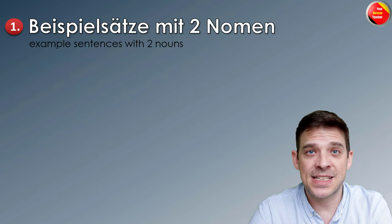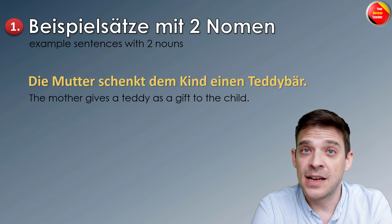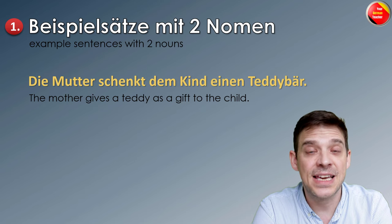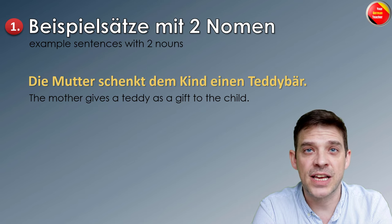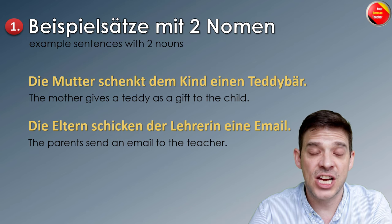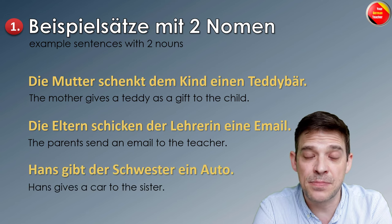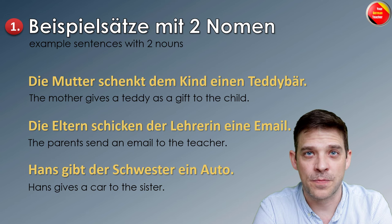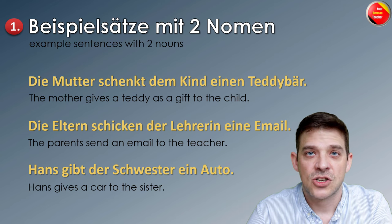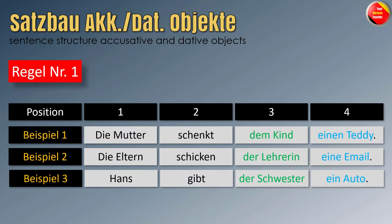Nummer eins: Beispielsätze mit zwei Nomen — examples with two nouns. Zum Beispiel: Die Mutter schenkt dem Kind einen Teddybär. Die Eltern schicken der Lehrerin eine E-Mail. Hans gibt der Schwester ein Auto. Das sind die drei Beispiele. Let's look at this in the sentence structure.